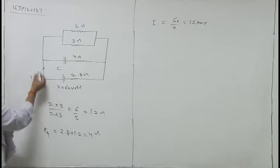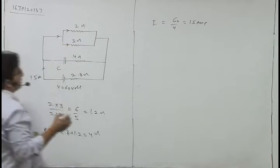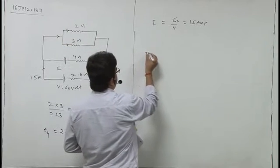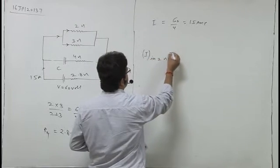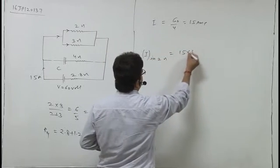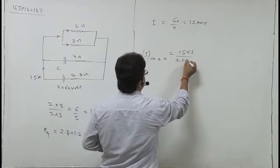15 ampere current yehaan jaye ge divide ho ga 2 mein aur 3 mein. So 2 mein kitna current jaye ga? I in 2 ohm. Total current into 3 divided by 2 plus 3.